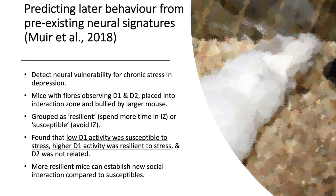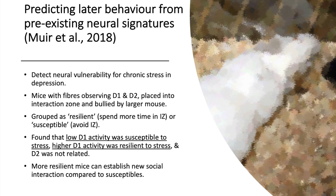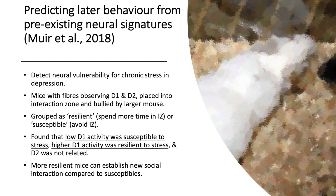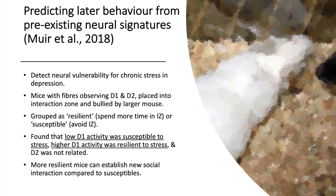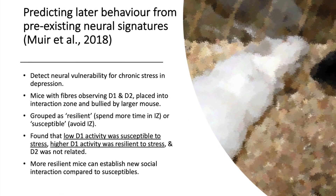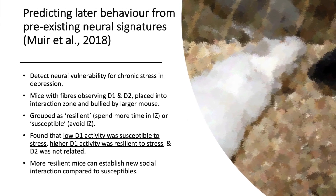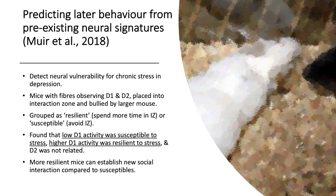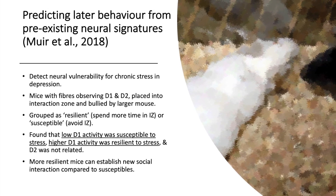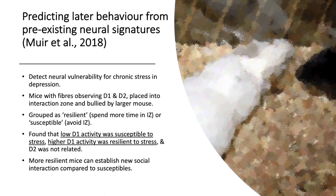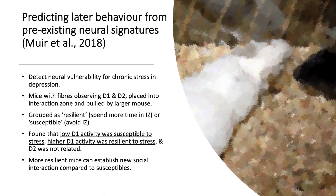Murr et al. 2018 predicted later behavior from pre-existing neural signatures. The researchers detected neural vulnerabilities for chronic stress in depression. Mice with fibers observing D1 and D2 were placed into the interaction zone and were bullied by larger mice. They were either grouped as resilient, whereby the mice spent more time in these interaction zones, or susceptible, where they avoided the interaction zones. It was found that low D1 activity was susceptible to stress and higher D1 activity was resilient to stress, but D2 was not related.